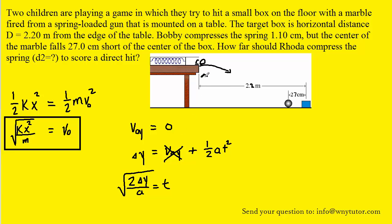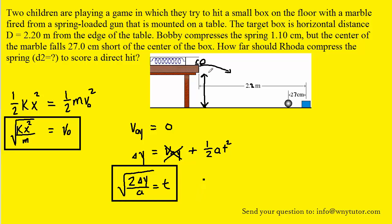Delta y is the vertical displacement that the ball falls, which is essentially the height of the table. Let's go ahead and box that equation as well. Now, as the ball flies off the table and towards its target, its horizontal velocity is constant — not the vertical velocity, because gravity is causing that to change with time, but the horizontal velocity is indeed constant.